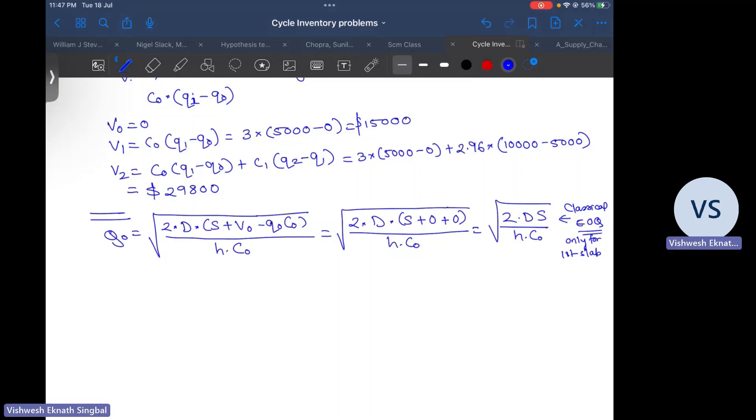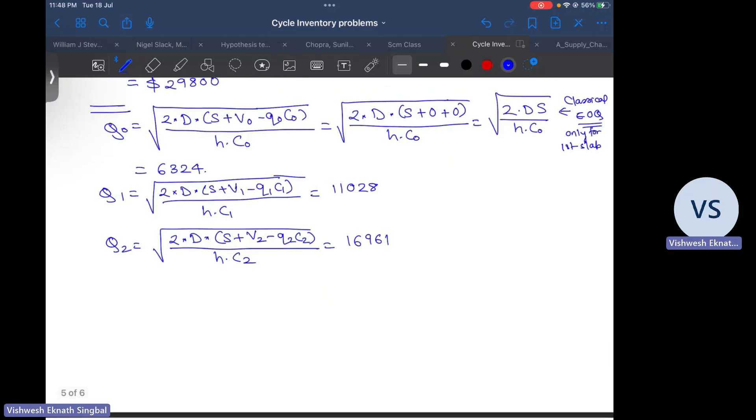Only for the first slab, because there is nothing to be taken care of, there are no previous slabs to be accounted for. If we just substitute the different values over here, we get 6324 - that is the EOQ. Then q1 is again under root 2 into D into S plus v1, that is 15,000, minus q1 c1 upon h c1. If we substitute all the values, we'll get a size of 11,028. Likewise for q2, it will be under root 2 into D into S plus v2 minus q2 c2 divided by h c2. We substitute all the values, we'll get 16,961.